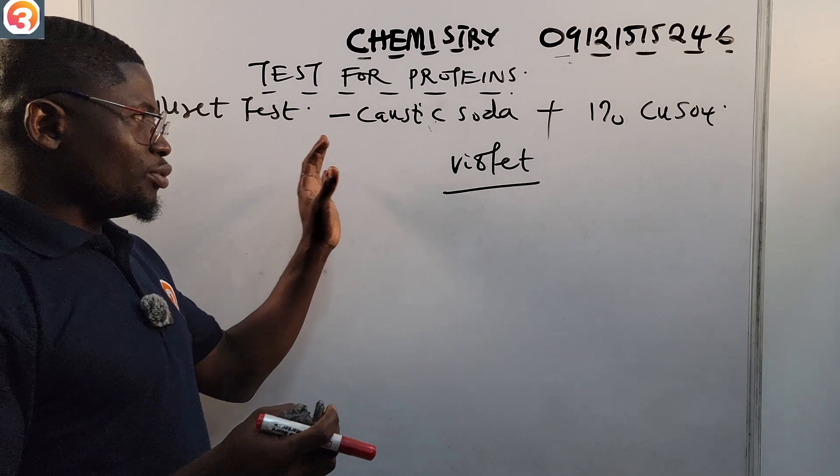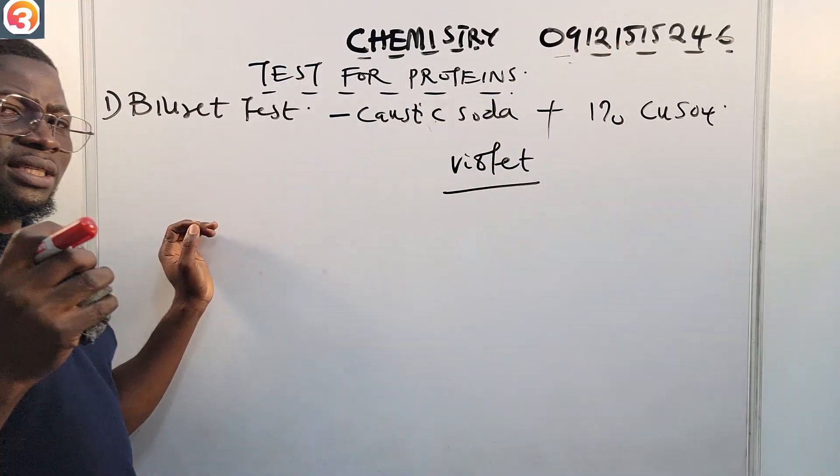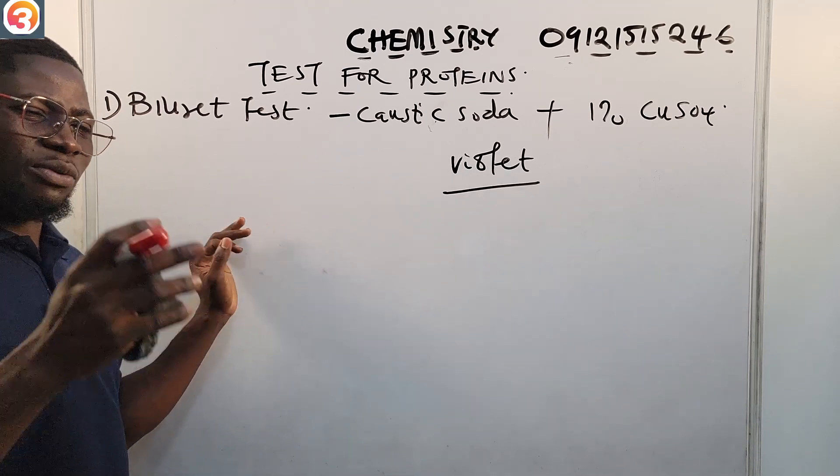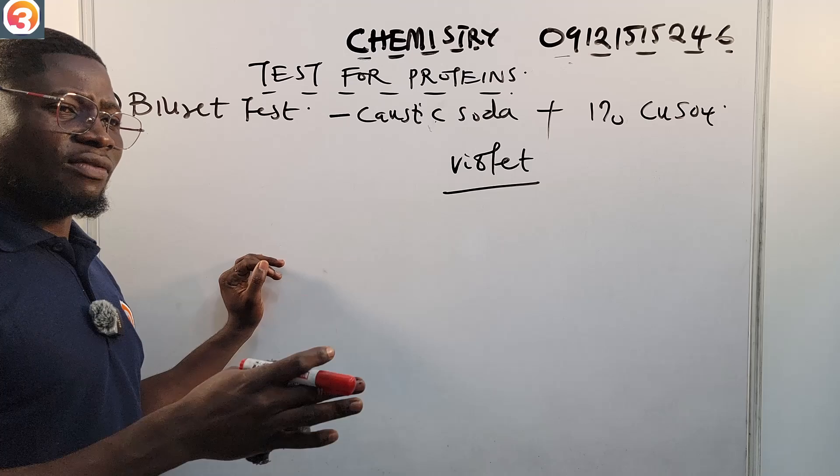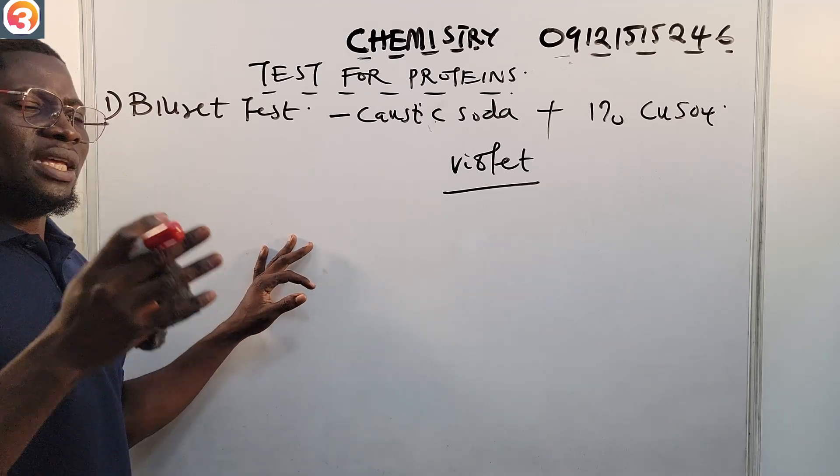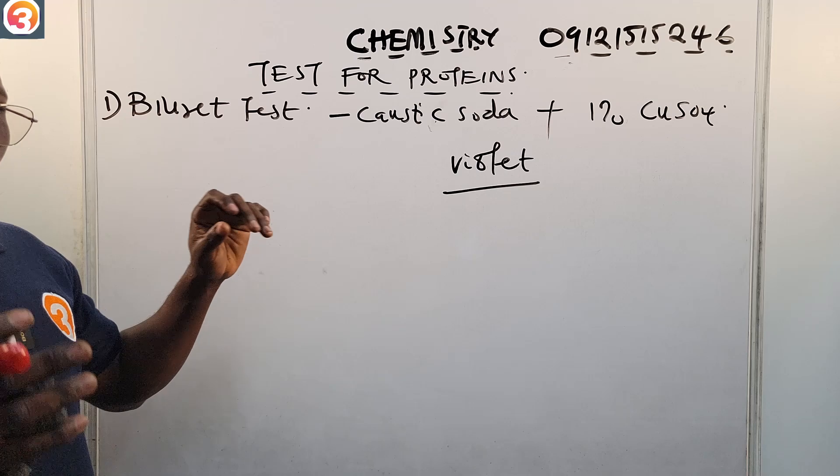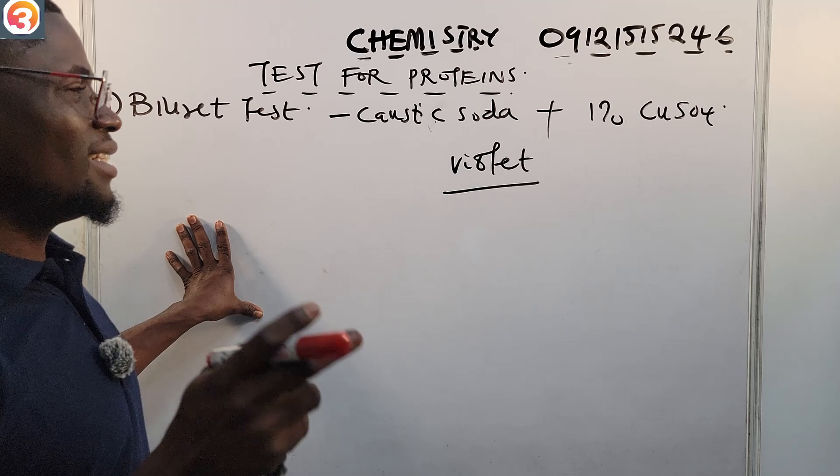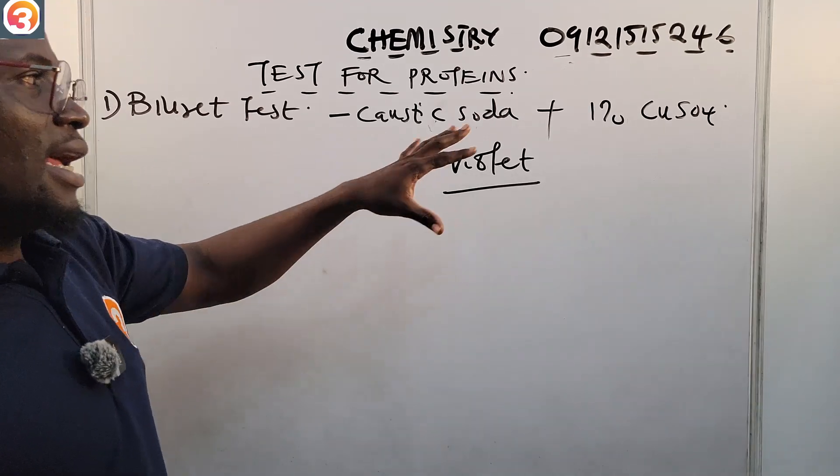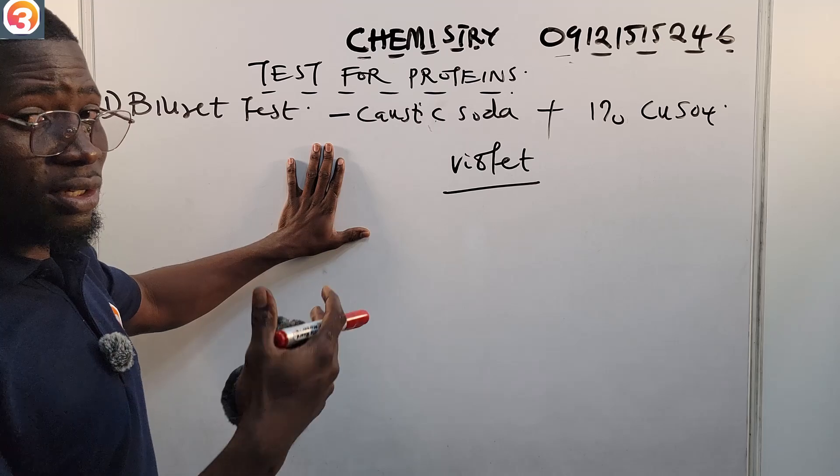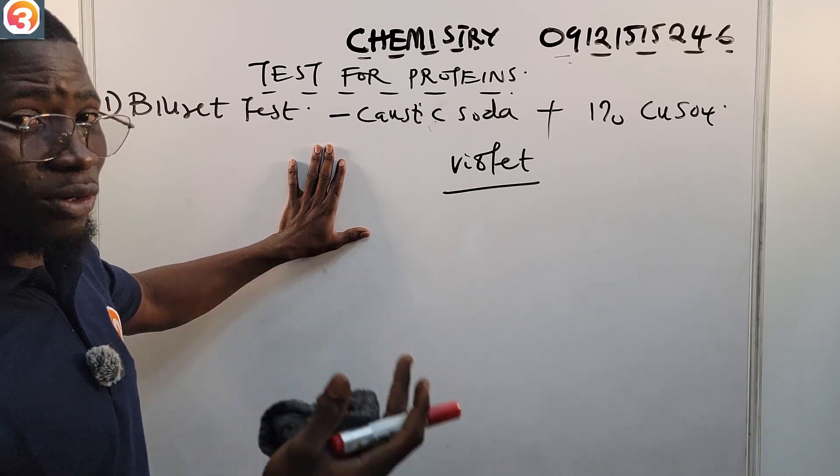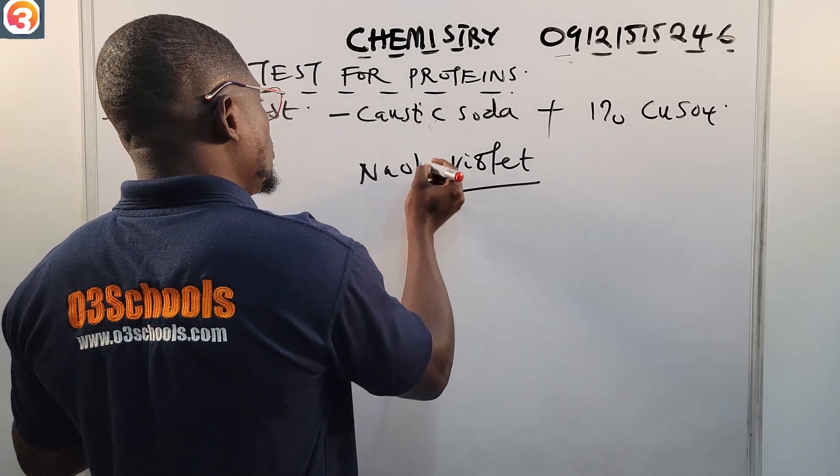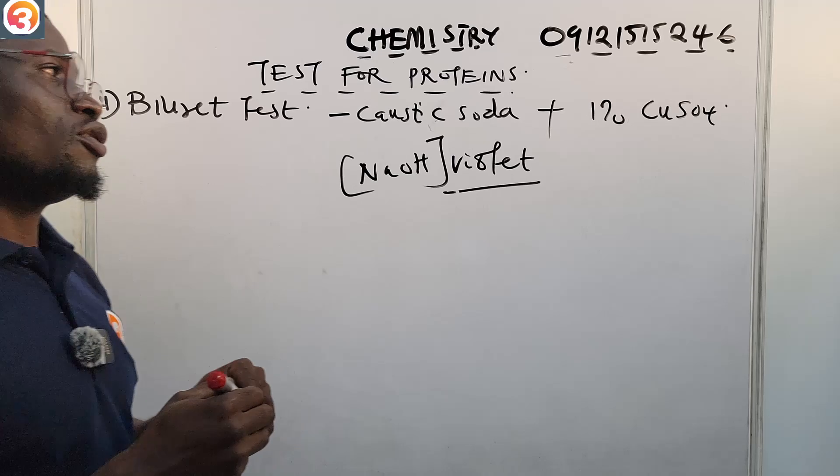Once you put this reagent in a substance that contains protein, you observe a violet color. That is, that means that substance or that food or whatever you are testing is a protein or it has peptide linkages or protein linkages in it. So now that is the first test called the Biuret test. In the Biuret is caustic soda and 1% copper sulfate. Caustic soda is sodium hydroxide, NaOH.